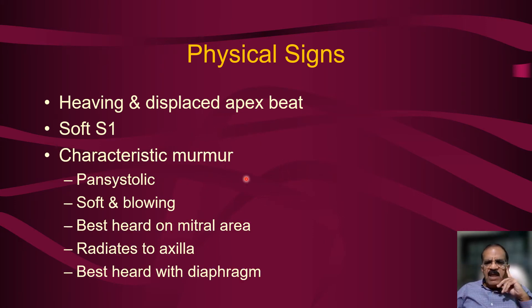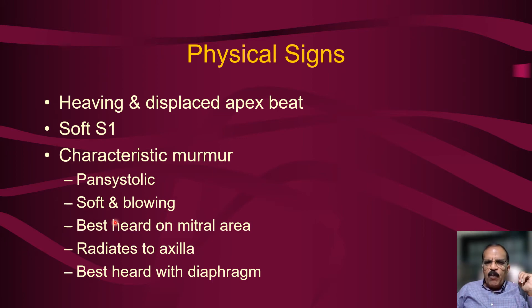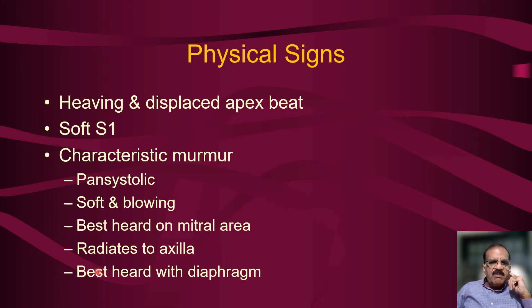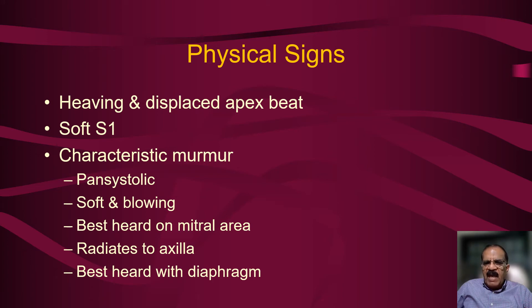The very characteristic murmur of mitral regurgitation is pan-systolic — heard throughout systole at the same intensity. It is soft and blowing in character. It is best heard on the mitral area — noting that the mitral area will be displaced in this patient — and it radiates to the left axilla. It is best heard with the diaphragm of the stethoscope. If you have auscultated a few patients with mitral regurgitation, you cannot miss this murmur.